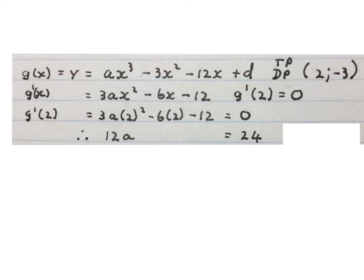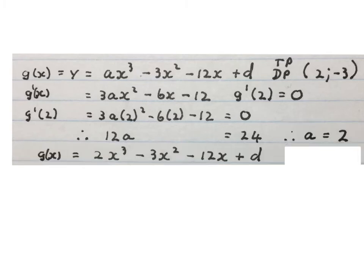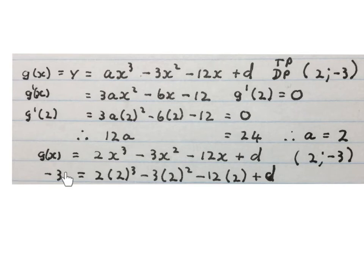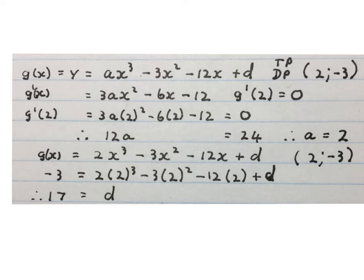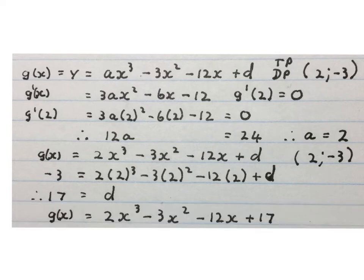Simplifying gives 12a = 24, therefore a = 2. The equation now looks like this with only d remaining unknown. Since (2, -3) is a turning point, that coordinate lies on the graph. Substituting y = -3 and x = 2 into the equation gives d = 17. The final equation has a = 2 and d = 17.